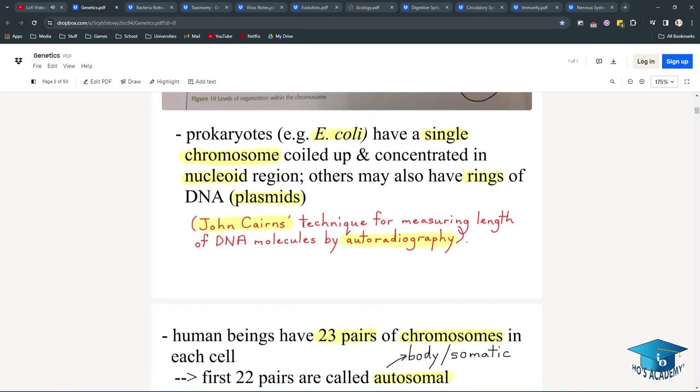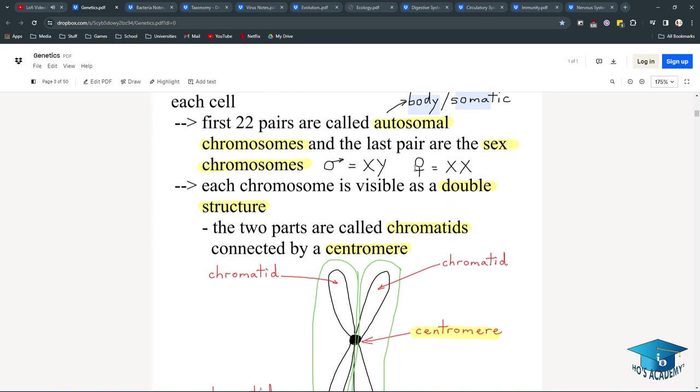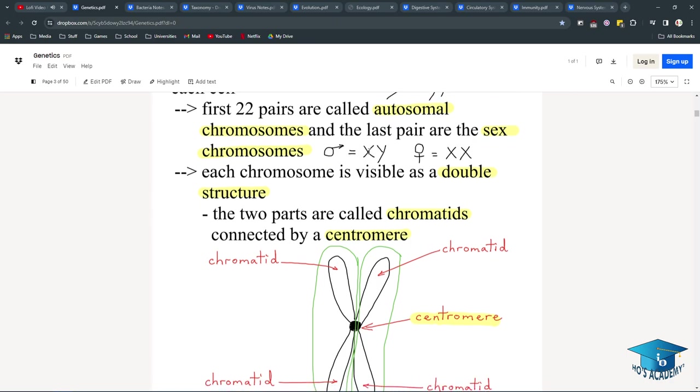John Cairns' technique for measuring length of DNA molecules by autoradiography. I think this is an important point that IB wants you to know. Human beings have 23 pairs of chromosomes in each cell. The first 22 are called autosomal, which means they're bodily or somatic chromosomes, and the last pair are sex. So 22 autosomal, the last 23rd one is the sex chromosome, XY or XX.